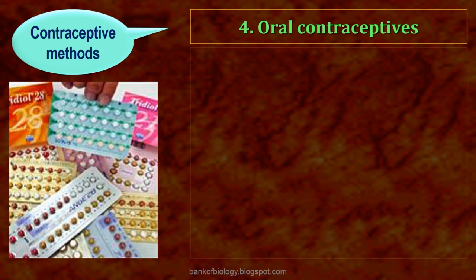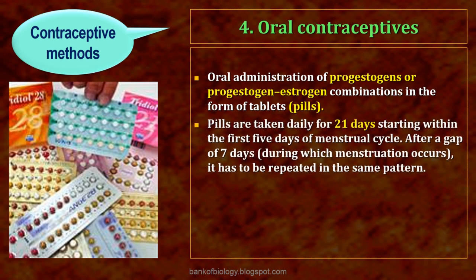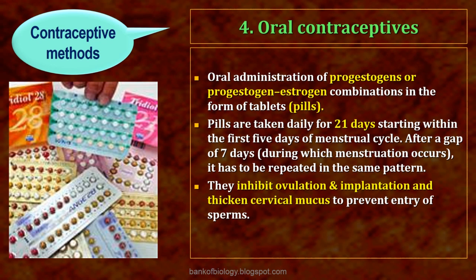Oral contraceptives involve the oral administration of progestogens or progestogen-estrogen combinations in the form of tablets or pills. Pills are taken daily for 21 days starting within the first 5 days of the menstrual cycle. After a gap of 7 days during which menstruation occurs, it has to be repeated in the same pattern till the female desires to prevent conception. Oral contraceptives inhibit ovulation and implantation, and thicken cervical mucus to prevent the entry of sperms. Pills are very effective with lesser side effects.